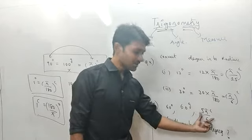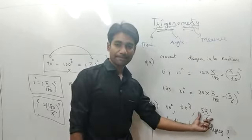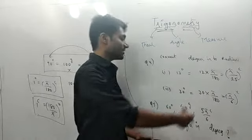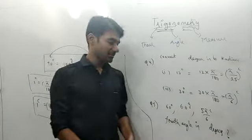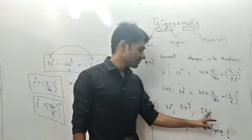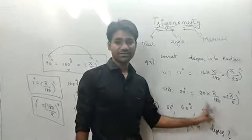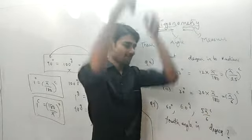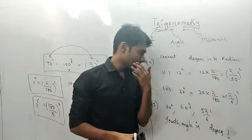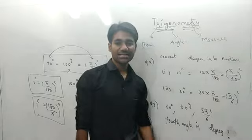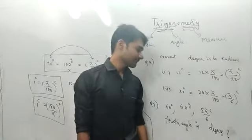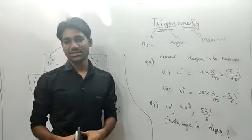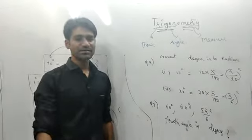Convert everything to degree scale. To convert radians to degrees, replace π with 180. So 5π/6 radians = 5×180/6 = 150 degrees. Convert 60 grades to degrees: 60 × 90/100 = 54 degrees. Then the 4th angle = 360 − 60 − 54 − 150 = 96 degrees.